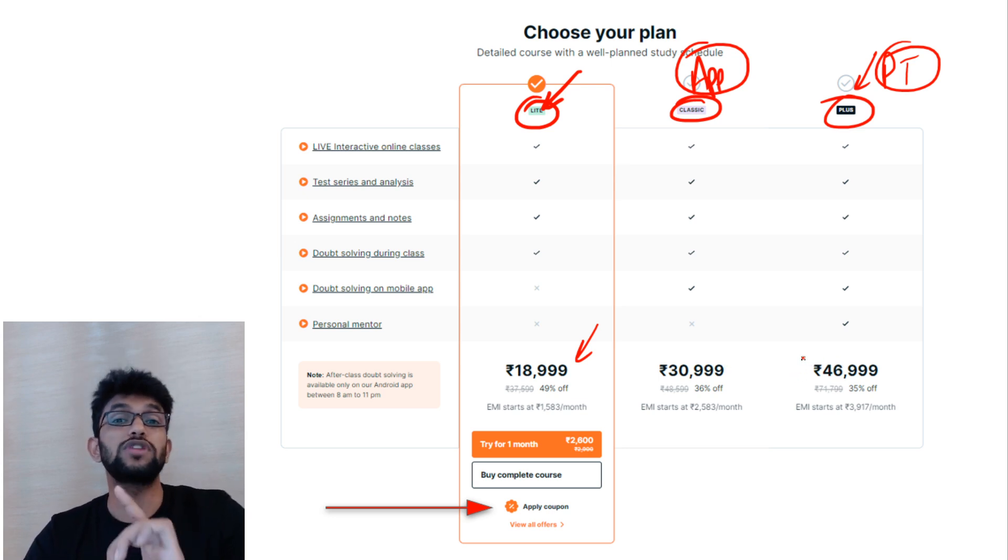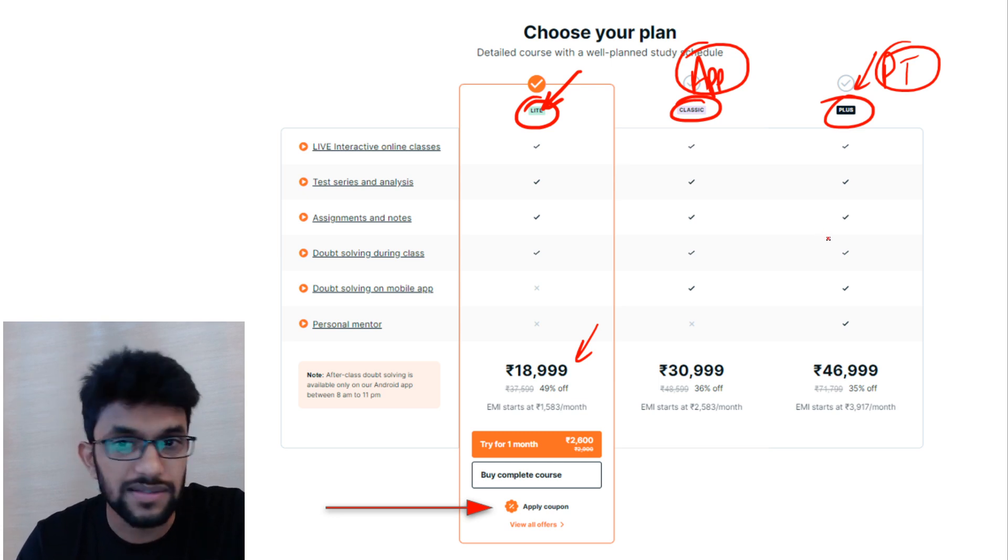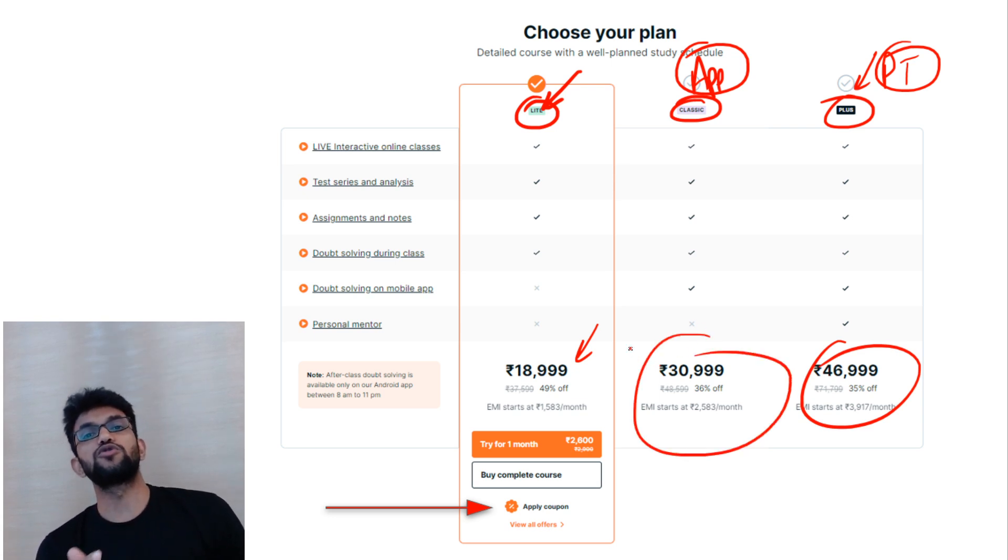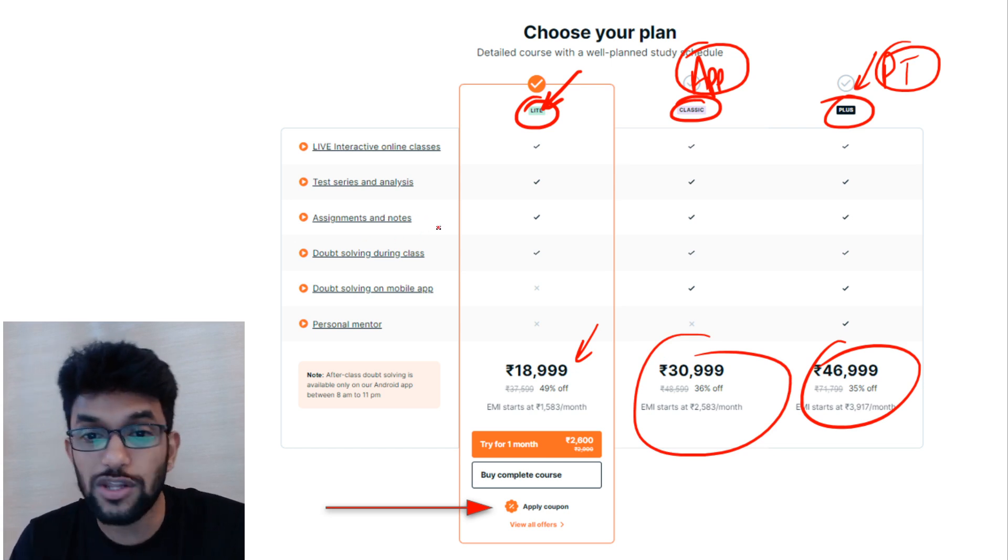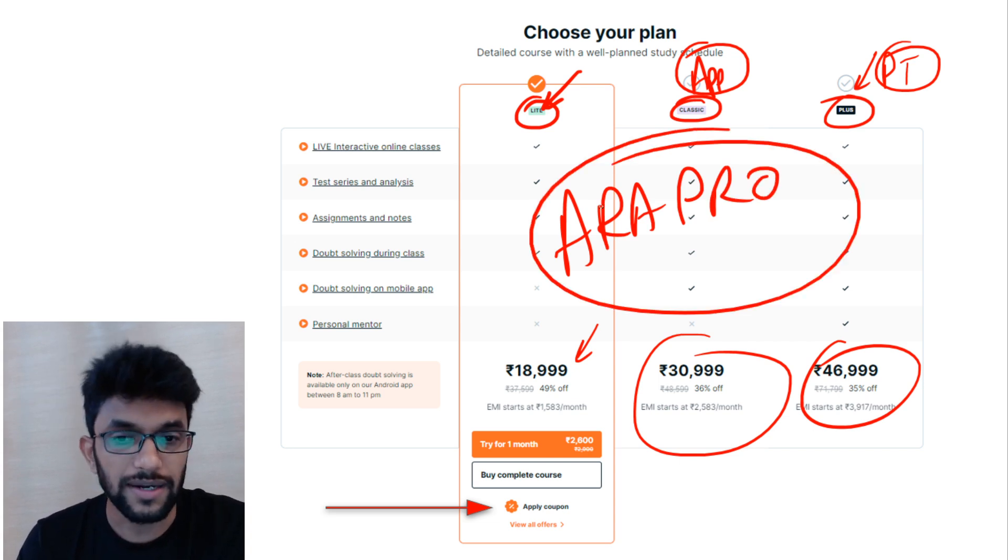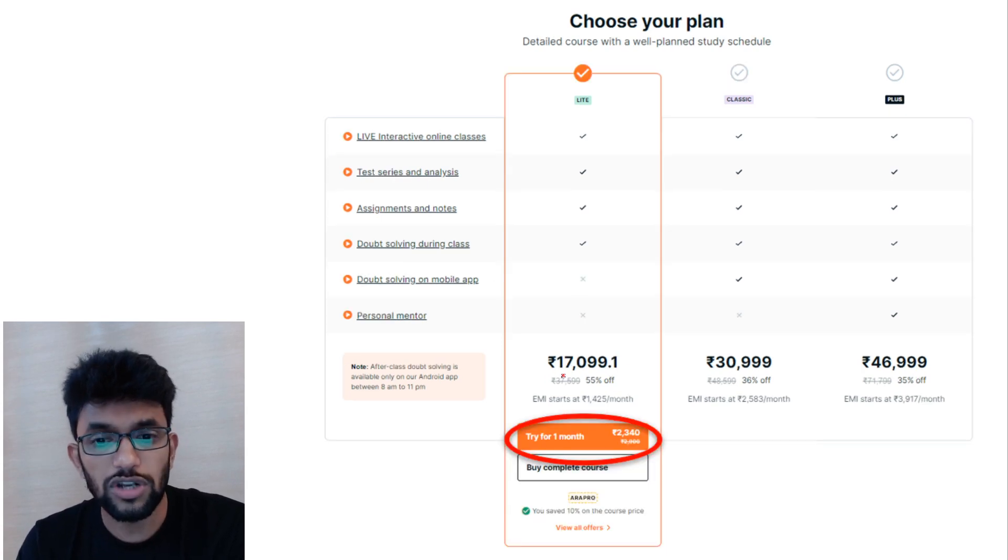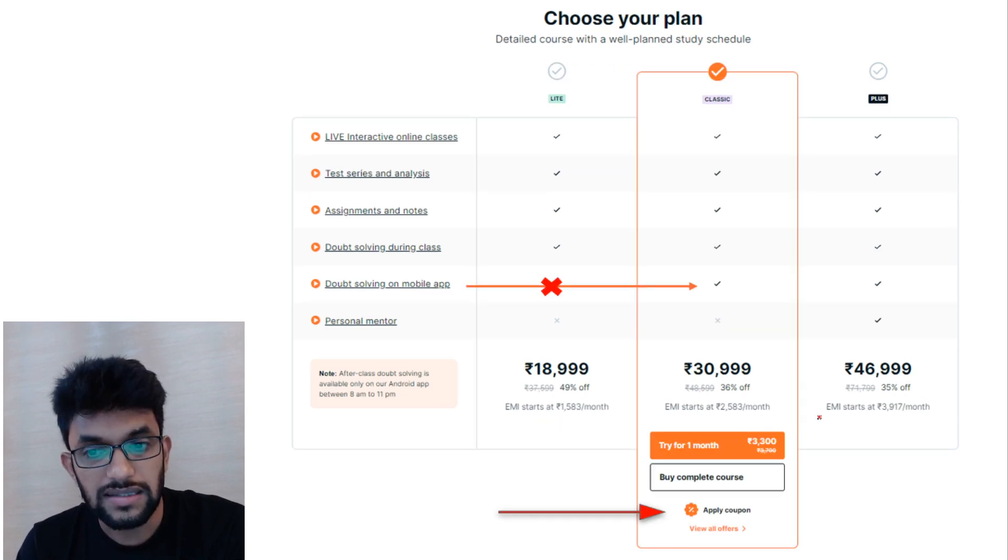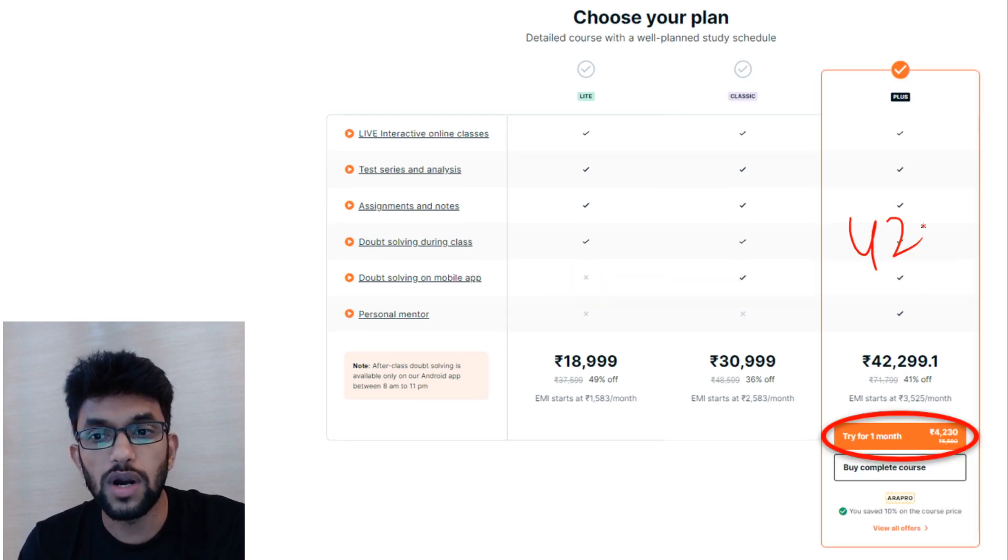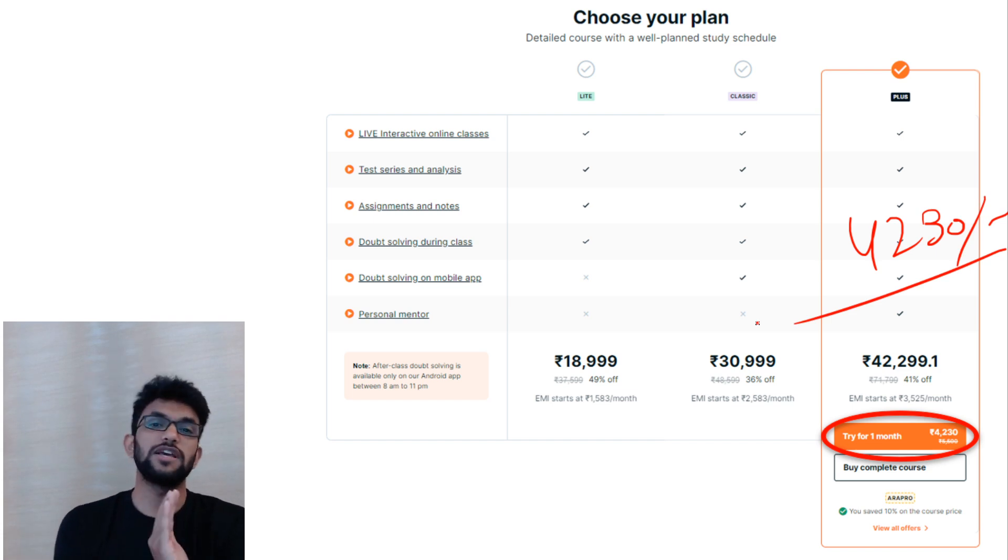You can choose any of these based on your requirements. For example, if you need a personal teacher and think you will be more at ease, you can choose Plus. If you can manage with the doubt app or think doubts don't come often, you can choose Light. If you use the code ARAPRO, you will get a discount - the most affordable discount. Light one month trial is Rs. 2,340. Classic is Rs. 3,300, after discount will be Rs. 2,970. And Plus is Rs. 4,230.